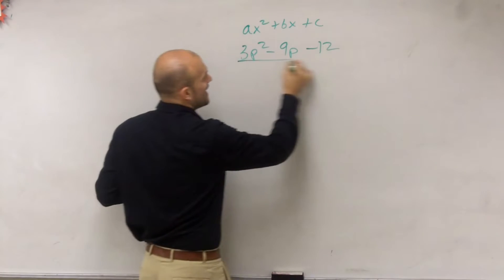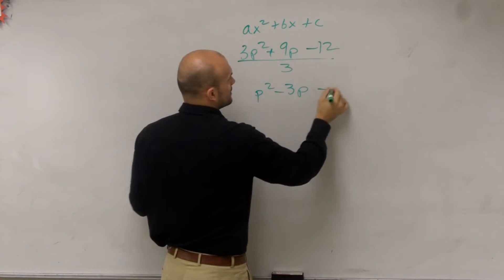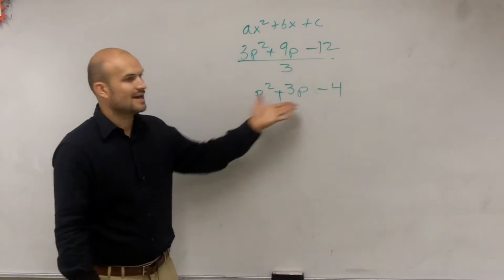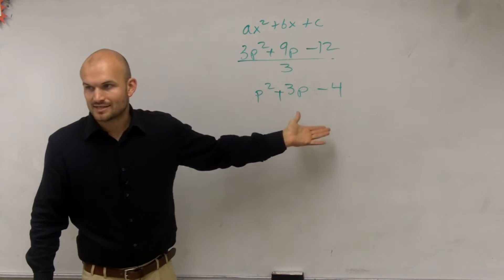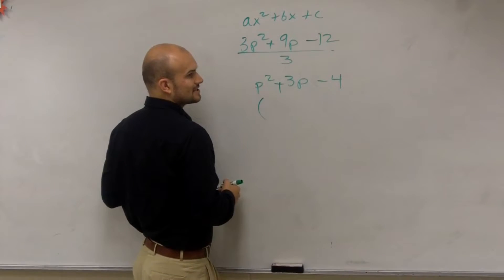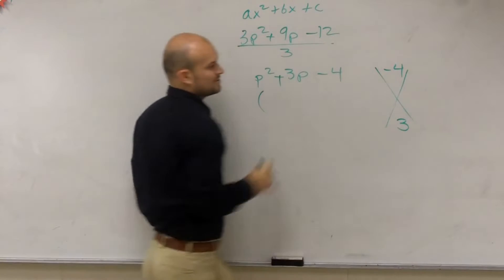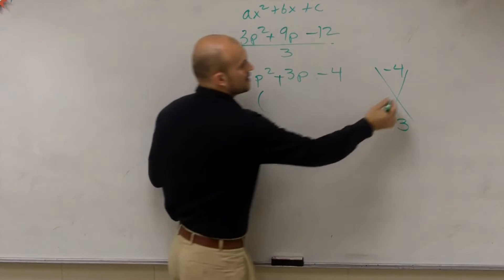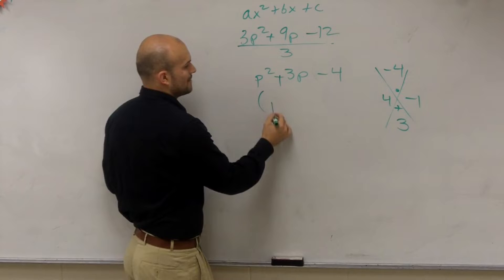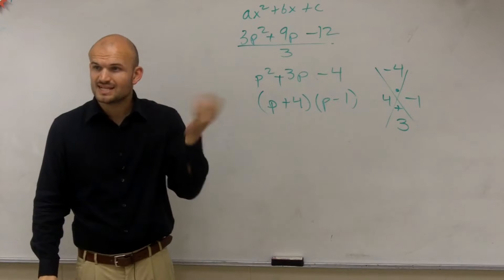So what I can do is divide everything by 3. Now I can write this as a product of two factors — I just factor out a 3. To write that as a product of your two factors, remember we do A times C which is negative 4, and B is 3. What two numbers multiply to give you negative 4 but add to give you 3? Positive 4 and negative 1. So therefore my factors are (P + 4)(P − 1). That's how it's factored correctly.